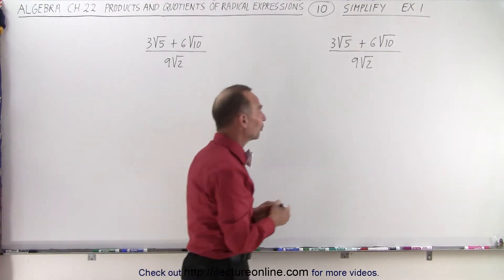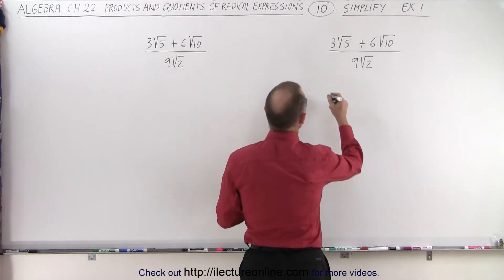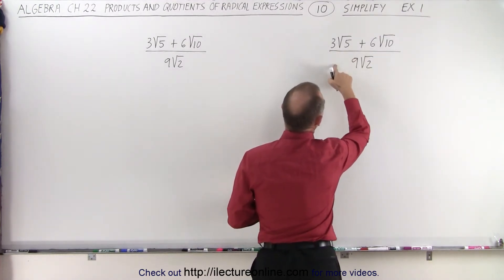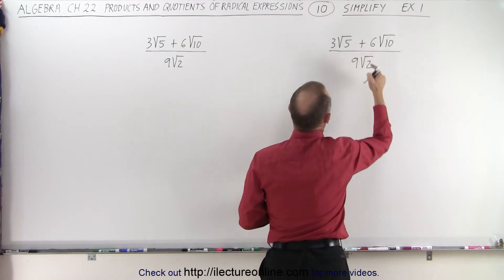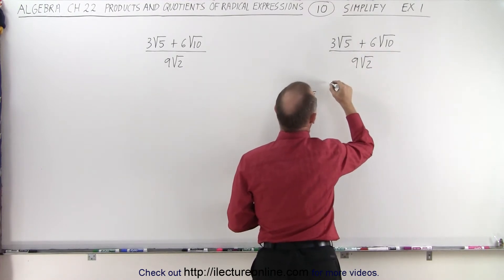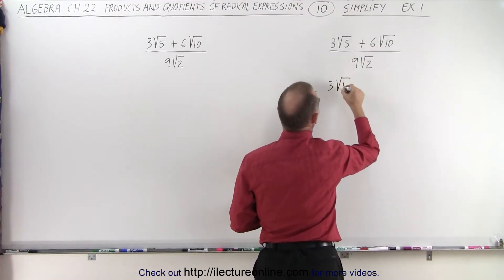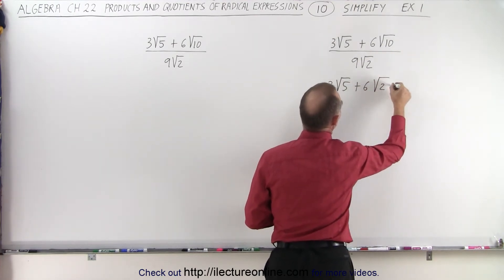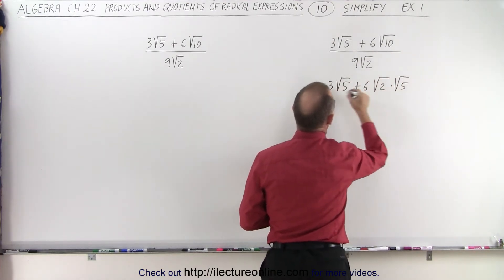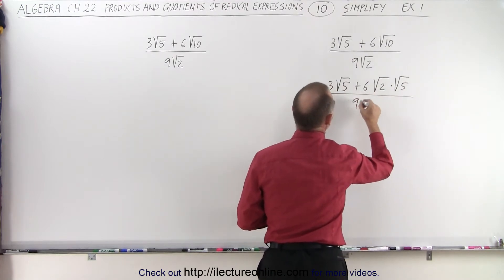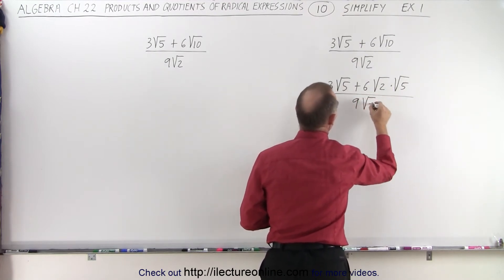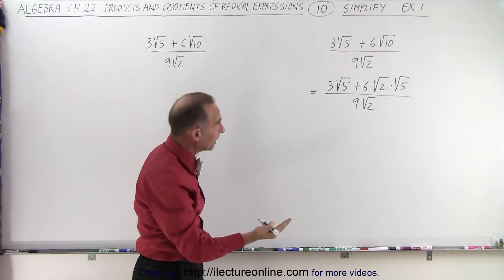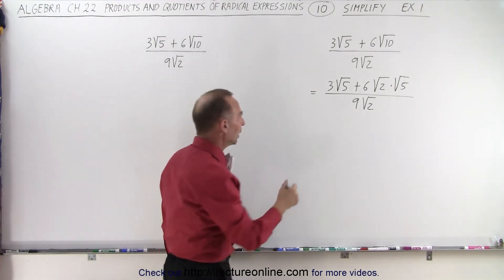Here we're going to first factor out what we can from the numerator. Notice we can factor out a 3, and we can rewrite this as 3 times the square root of 5, plus 6 times the square root of 2 times the square root of 5, all divided by 9 times the square root of 2. Clearly you can factor out a 3 and the square root of 5 out of the numerator.